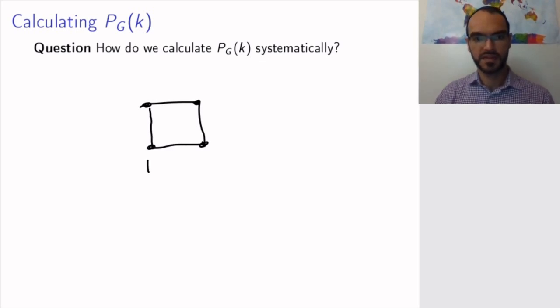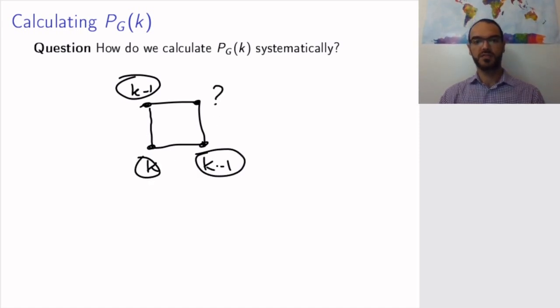Then I start nicely. I have this one has to be k, this one has to be k minus one, and this one has to be in k minus one, too. But then what about this one? This one is adjacent to these two, so you might be tempted to say okay k minus two, but I haven't forbidden these two vertices from having the same color because they are not adjacent.